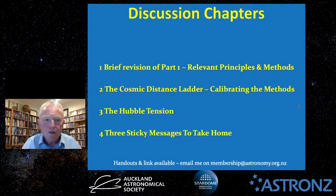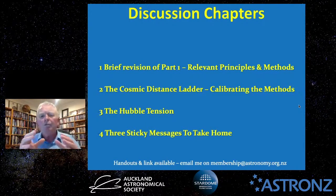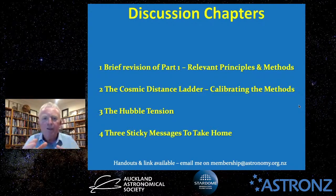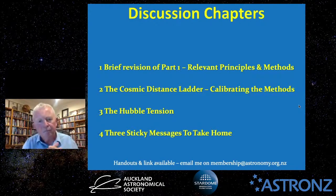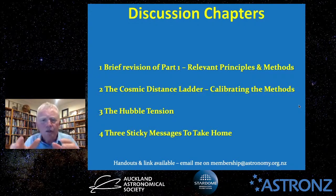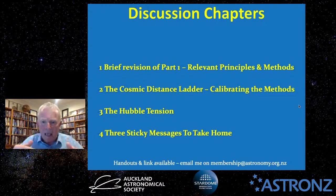I've split the talk into four main chapters. First, a brief revision of the relevant principles and methods from part one. Then I'll talk about the Cosmic Distance Ladder and how astronomers use it to calibrate these methods. Then we're going to talk about the Hubble Tension, and finally three take-home messages.